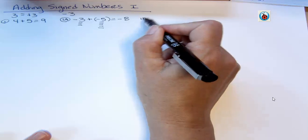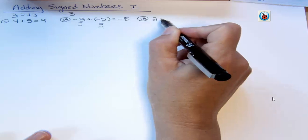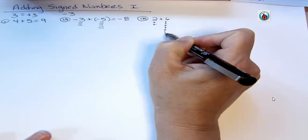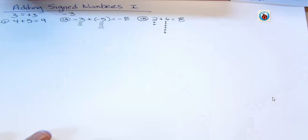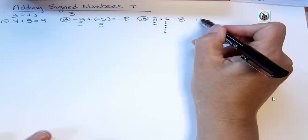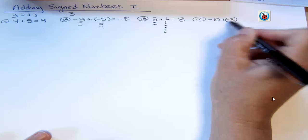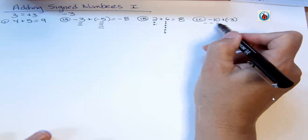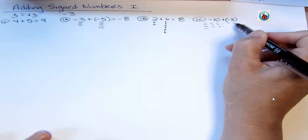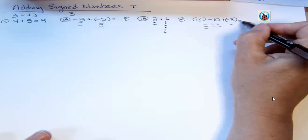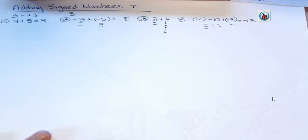If you have two plus six, you've got two positives and then six positives — a total of positive eight. If you have negative ten plus negative three, you have ten negatives and three more negatives. Your answer would be negative thirteen — you count up all your negative signs and have a total of negative thirteen. So that's what happens when you're adding two numbers that have the same sign: you just combine them together. You get more of the same — more positives or more negatives.